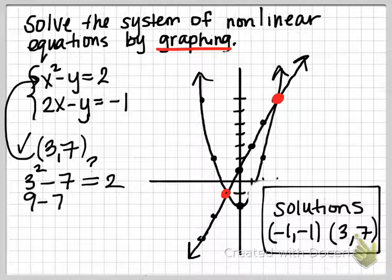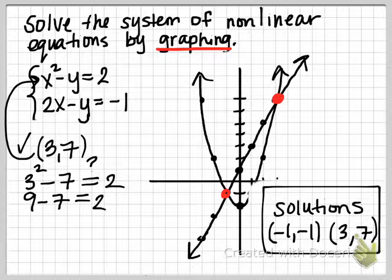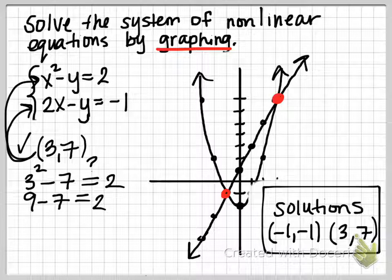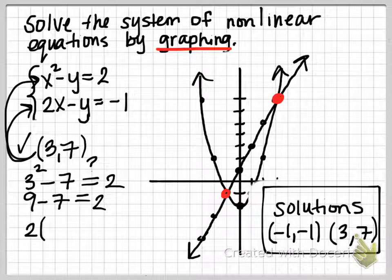And indeed, we see that that's 9 minus 7, and that does equal 2. And then I can also substitute that point, that coordinate, into the linear equation. So 2 times x, 2 times 3, minus y.